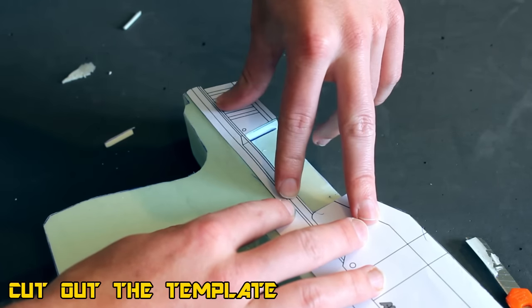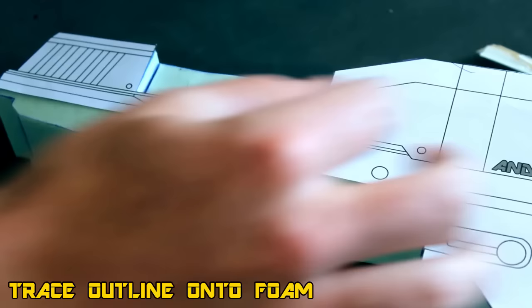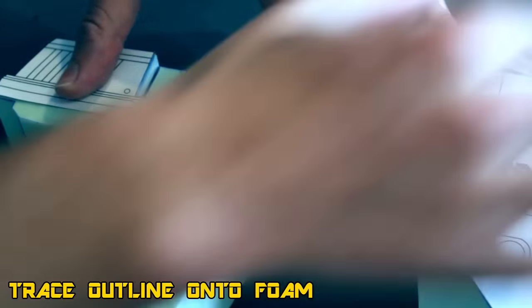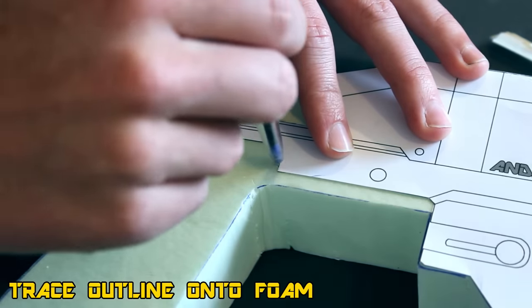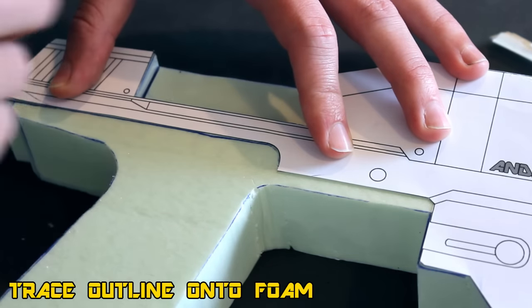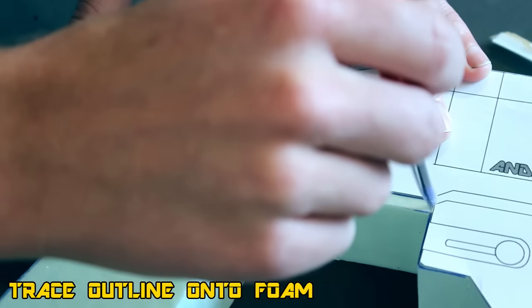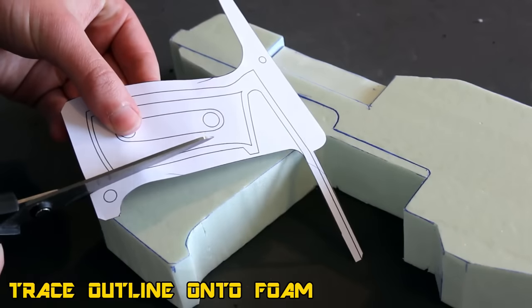Once you've cut that out, simply place it back onto your sheet of foam and then we're going to trace it like any other template we've done before. Grab a blue pen or black pen or whichever color you like and slowly and very carefully draw the outline.